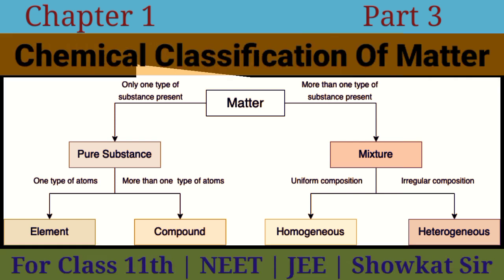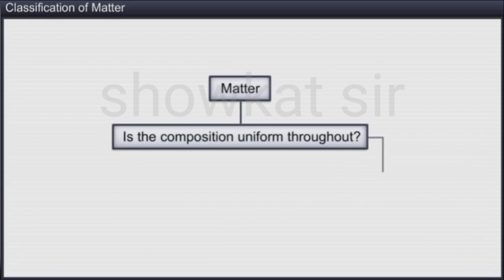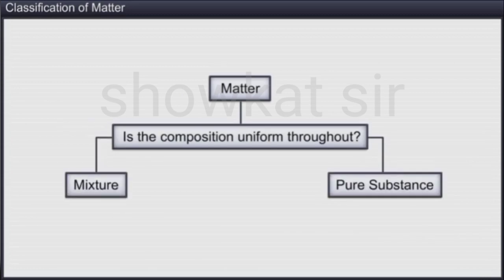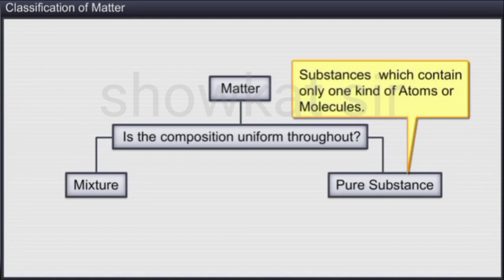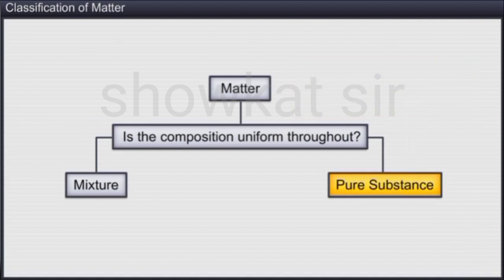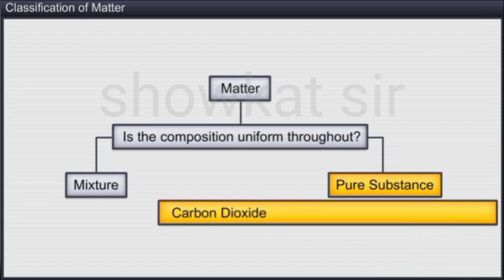Matter is classified into two categories: mixture and pure substance, based on whether composition is uniform throughout or not. A pure substance contains only one kind of atoms or molecules. For example, water and carbon dioxide are pure substances because they are made up of only one kind of particles.